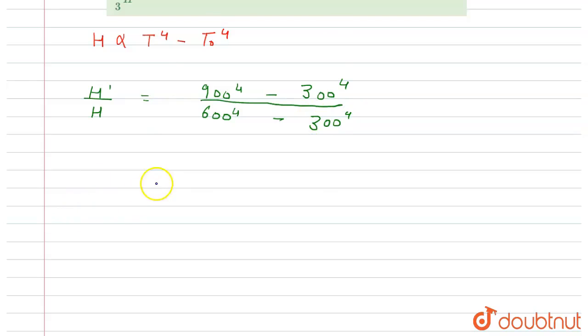Right, so if we further simplify, 9 raised to power 4 minus 3 raised to power 4 divided by